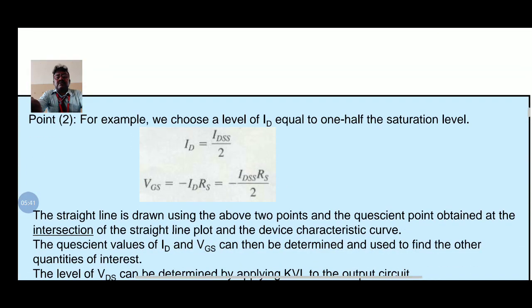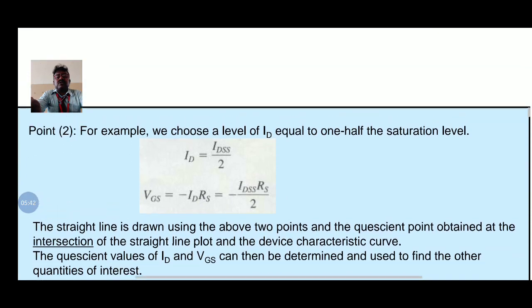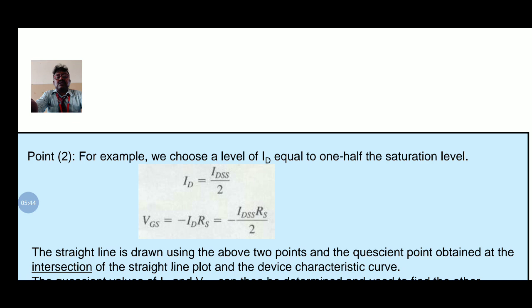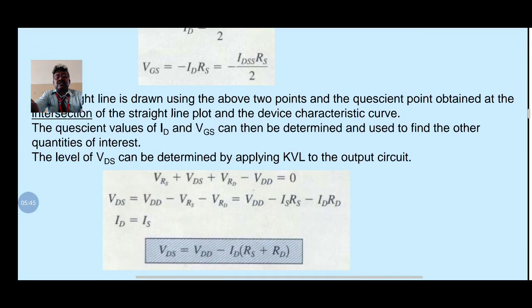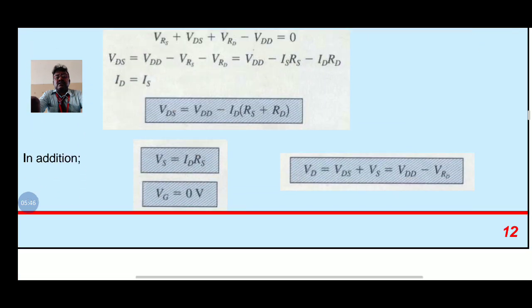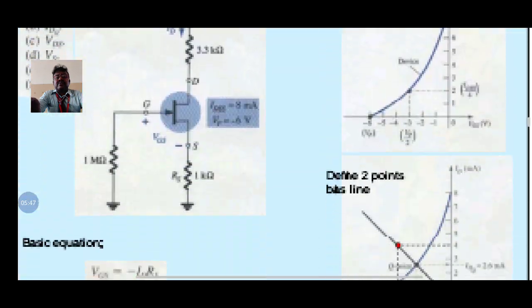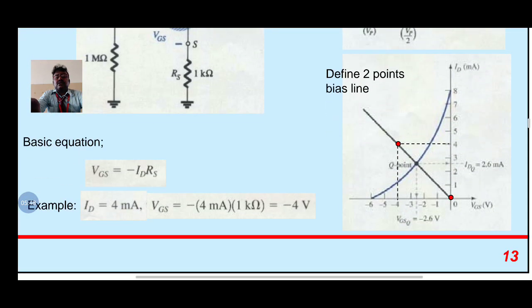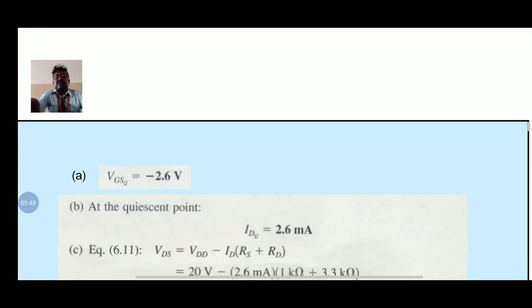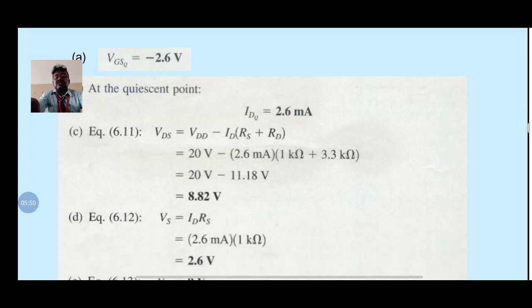The figure shows examples for the self bias configuration, and these are the two examples of the self bias configuration.